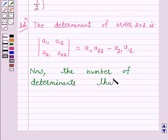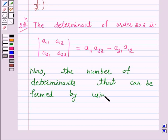that can be formed by using the digits 0 or 1 is equal to 2 raised to power 4 and this is equal to